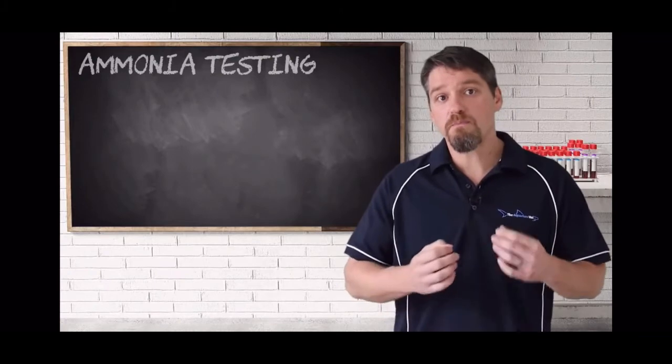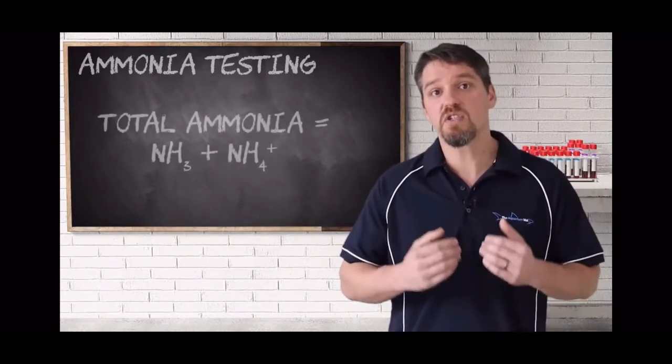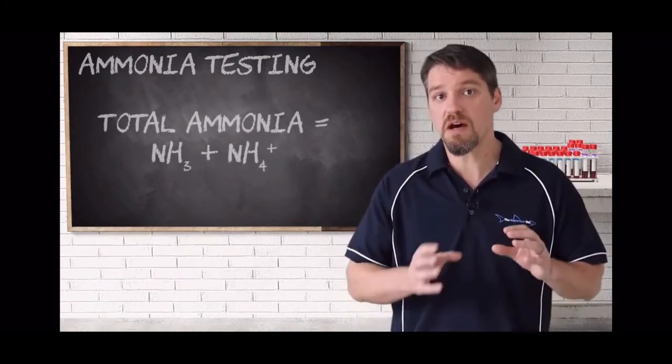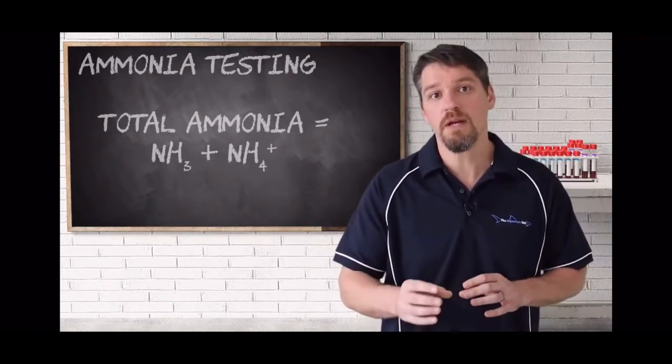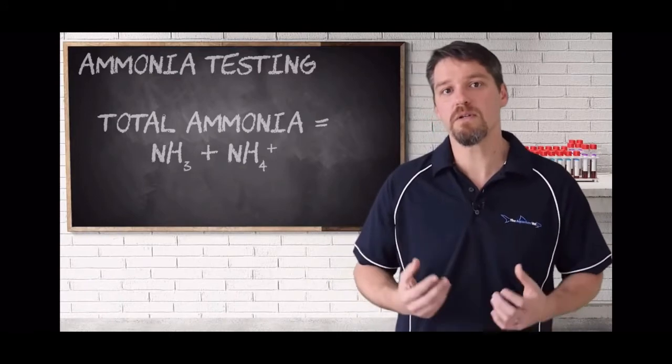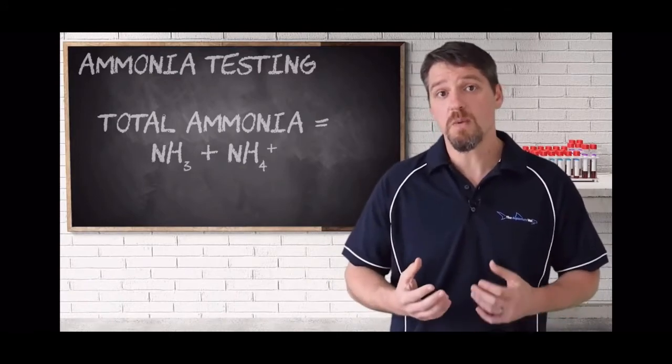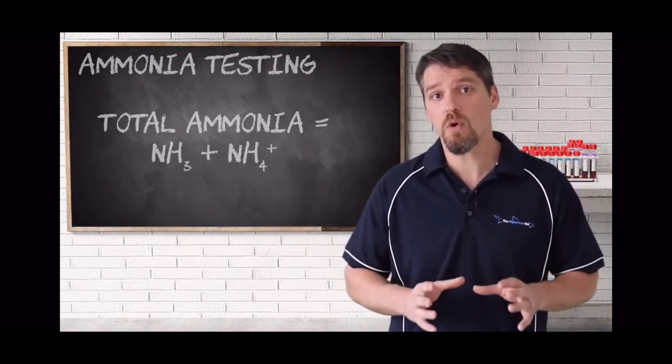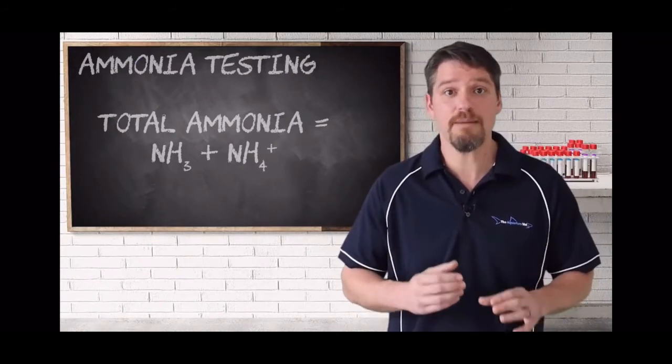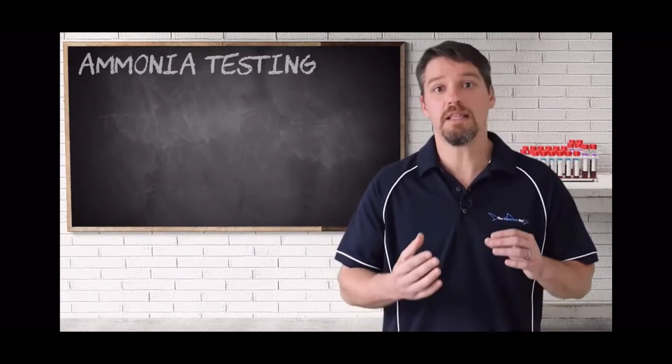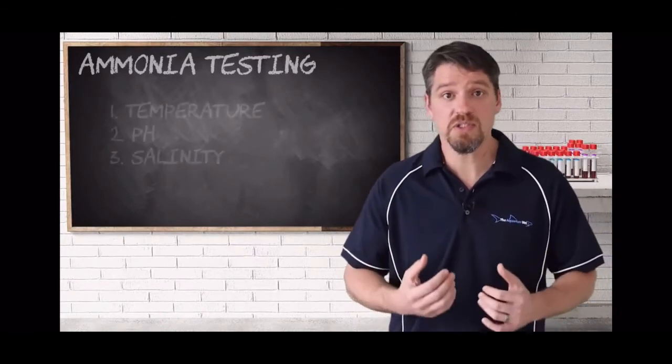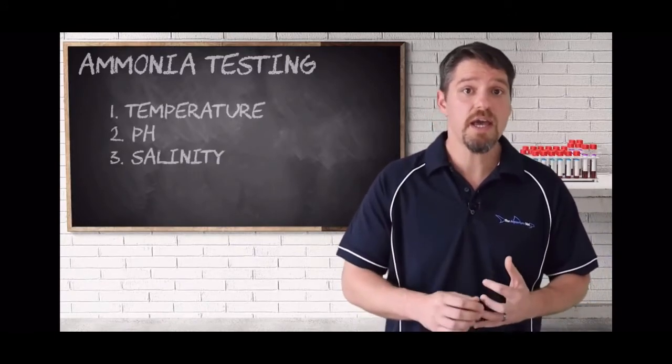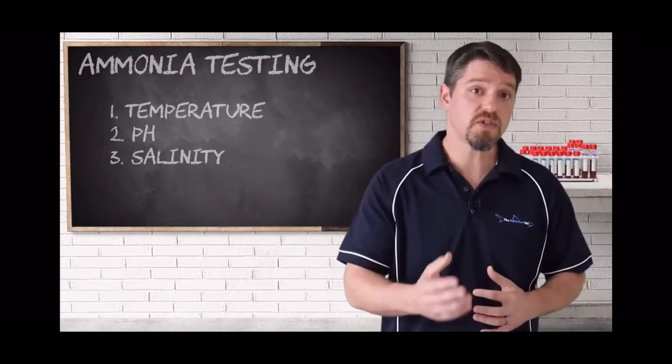Results from both of those tests give us total ammonia. And now recall this includes both toxic NH3 and the less toxic ammonium or NH4+. And so in order to get a better interpretation of those results, we need to consider two other important water quality parameters that affect that balance of a toxic ammonia and the less toxic ammonium. In freshwater tanks, this includes temperature and the pH. And in marine systems, the salinity must also be considered.